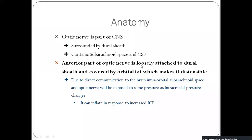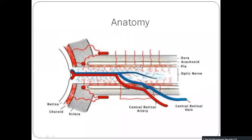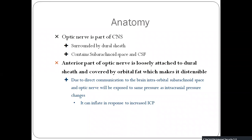The first thing is the anatomy of the optic nerve. The optic nerve is part of the CNS, which is surrounded by the dural sheath, which contains the subarachnoid space and the CSF. The anterior part of the optic nerve is loosely attached to the dural sheath, which is covered by the orbital fat, and that makes it distensible. Due to the direct communication to the brain, the intraorbital subarachnoid space in the optic nerve will be exposed to the same pressure when the intracranial pressure changes.